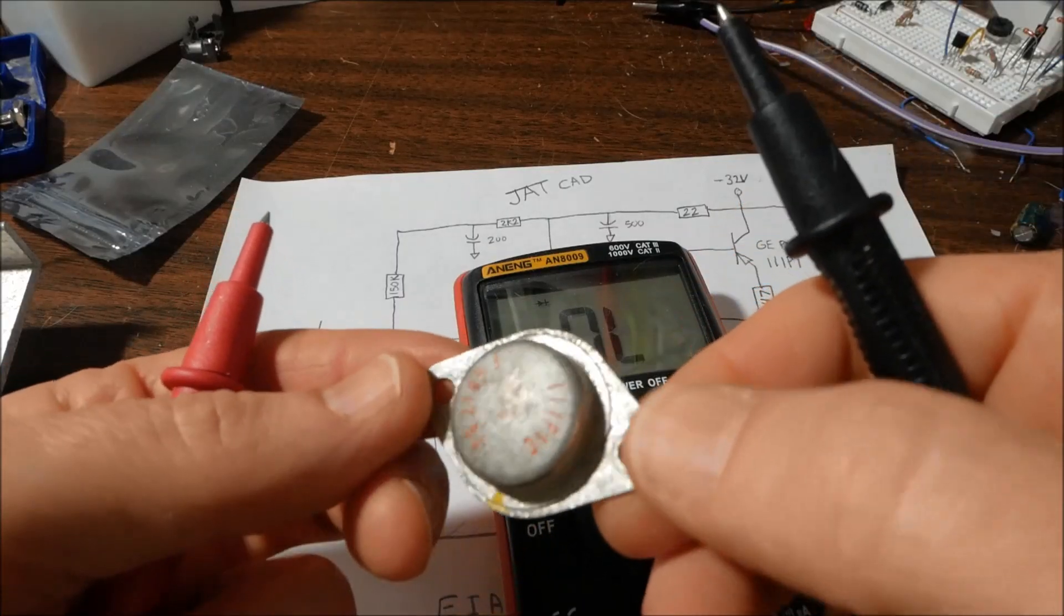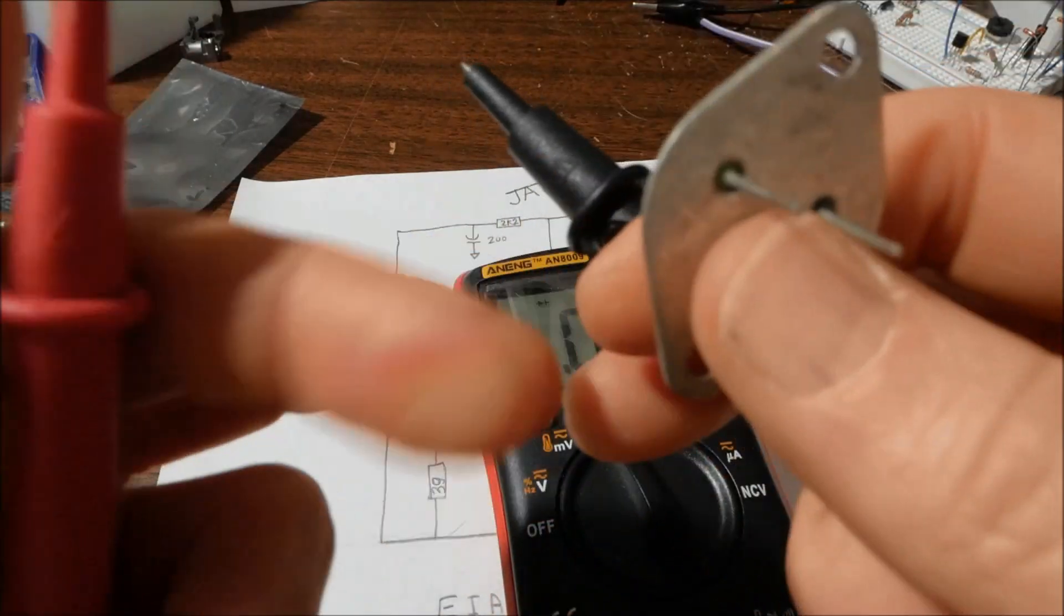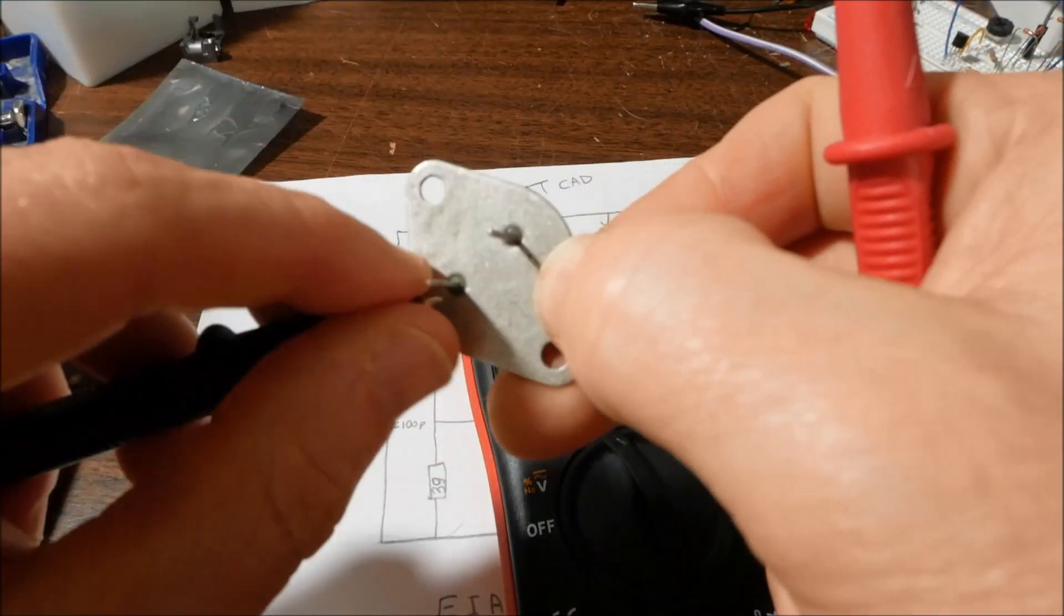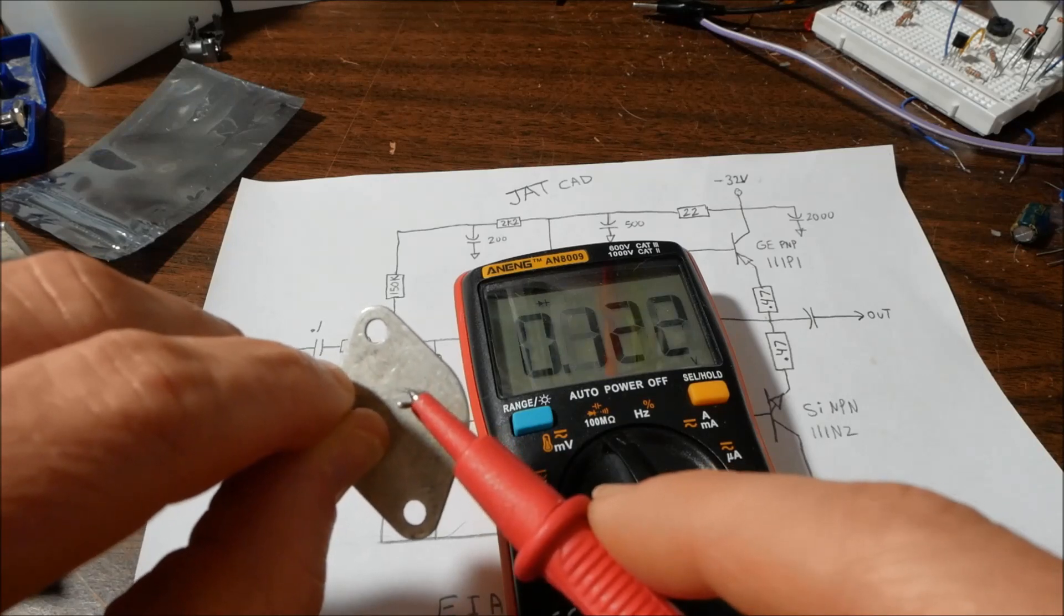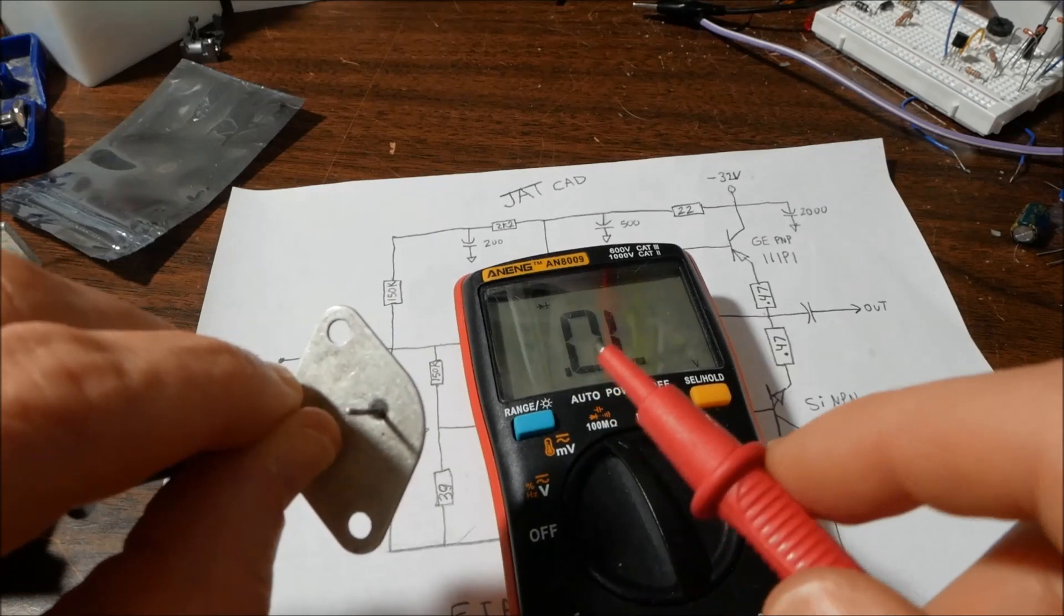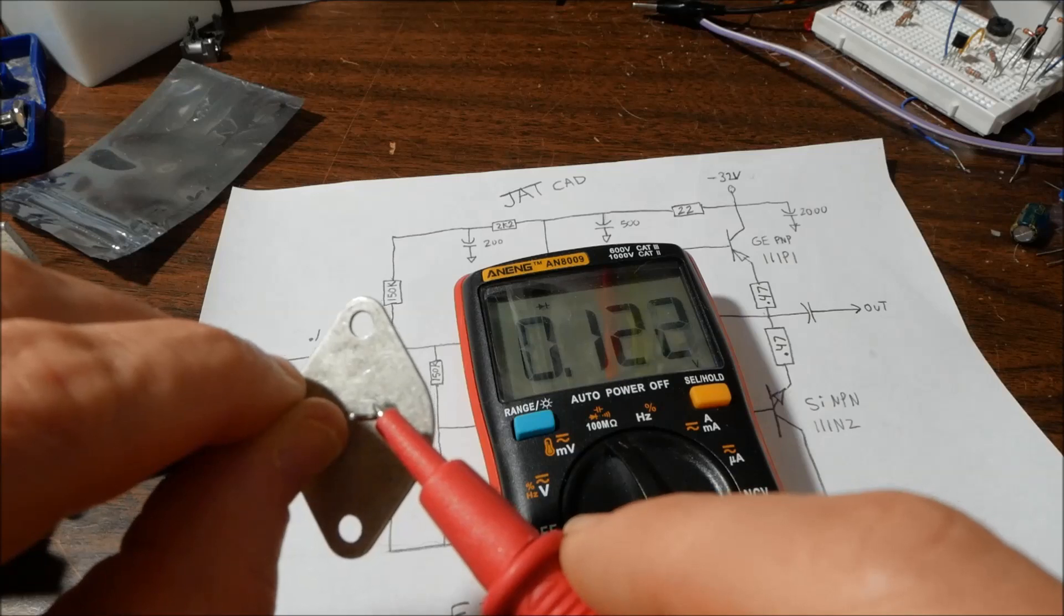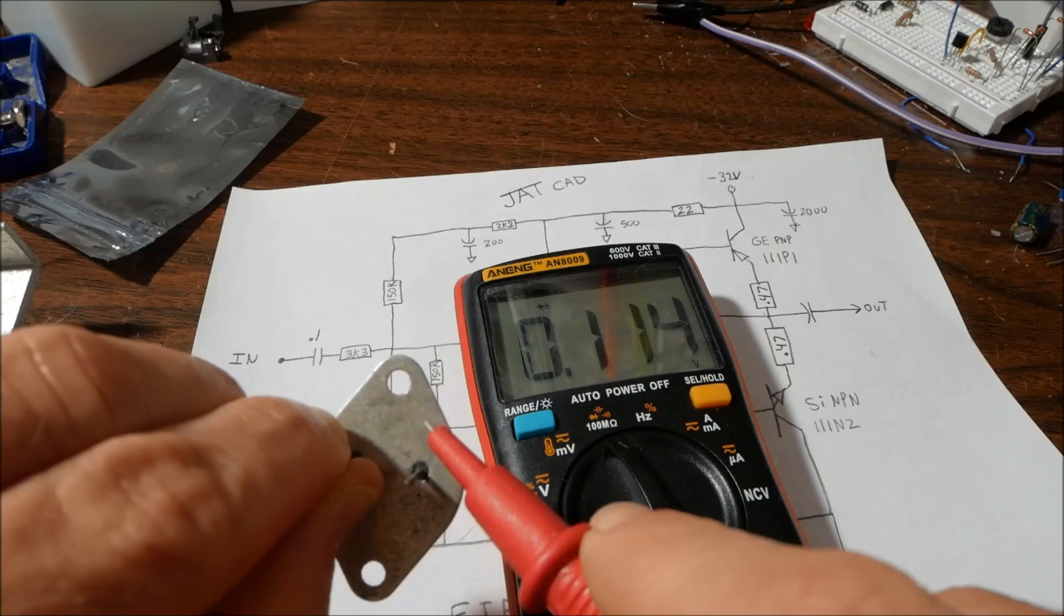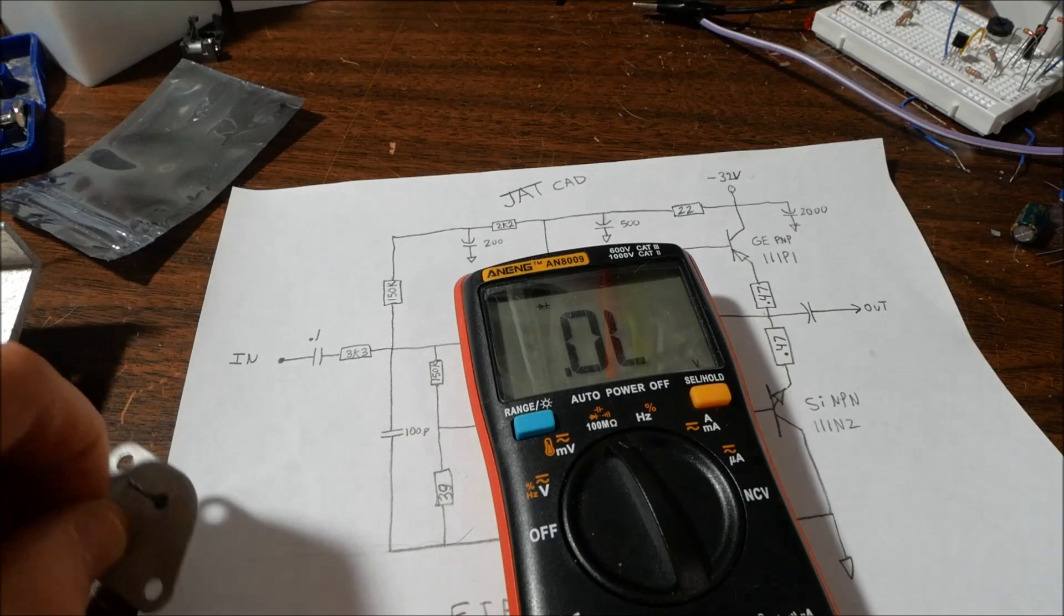Real quick here, this is a germanium transistor and it's PNP. So if I put my negative probe on the base and measure the emitter, you see you have a very low voltage. Instead of the about half a volt with silicon, you get 0.1 or 0.2. Same with the collector. That's a germanium transistor.